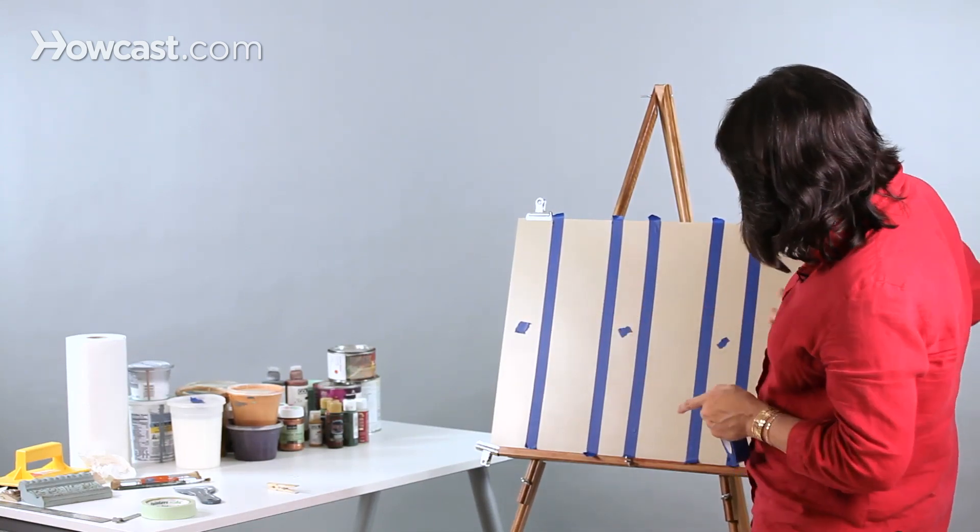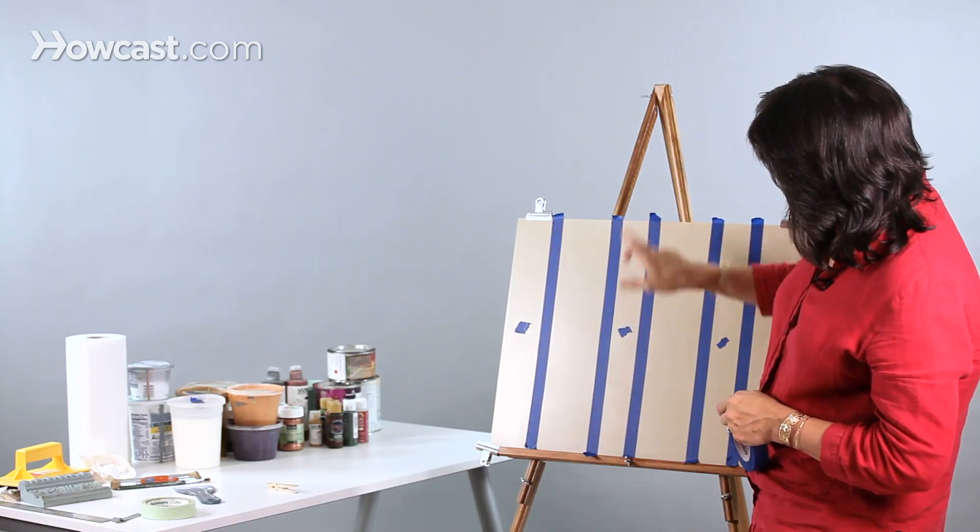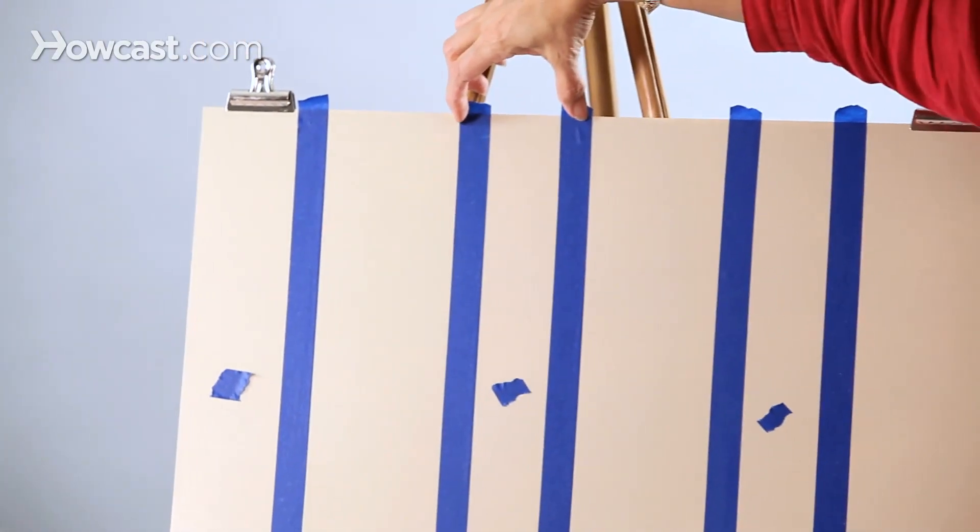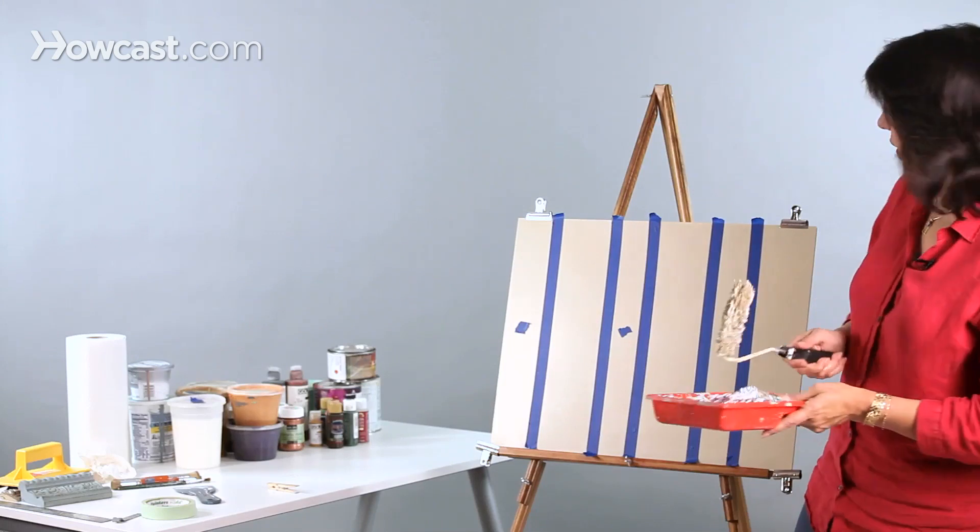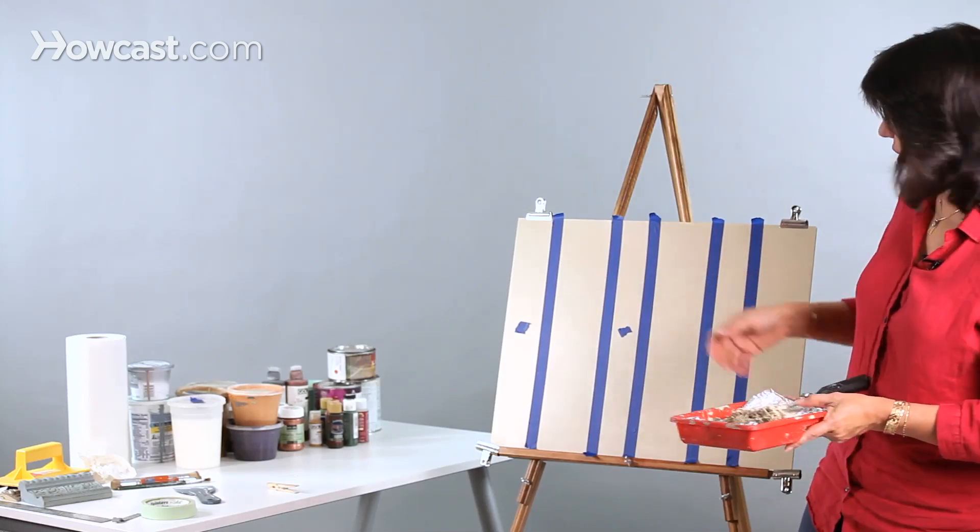So this is four inches, four inches, four inches. But what might surprise you is this is also four inches. So now this is the same color as the semi-gloss base coat.